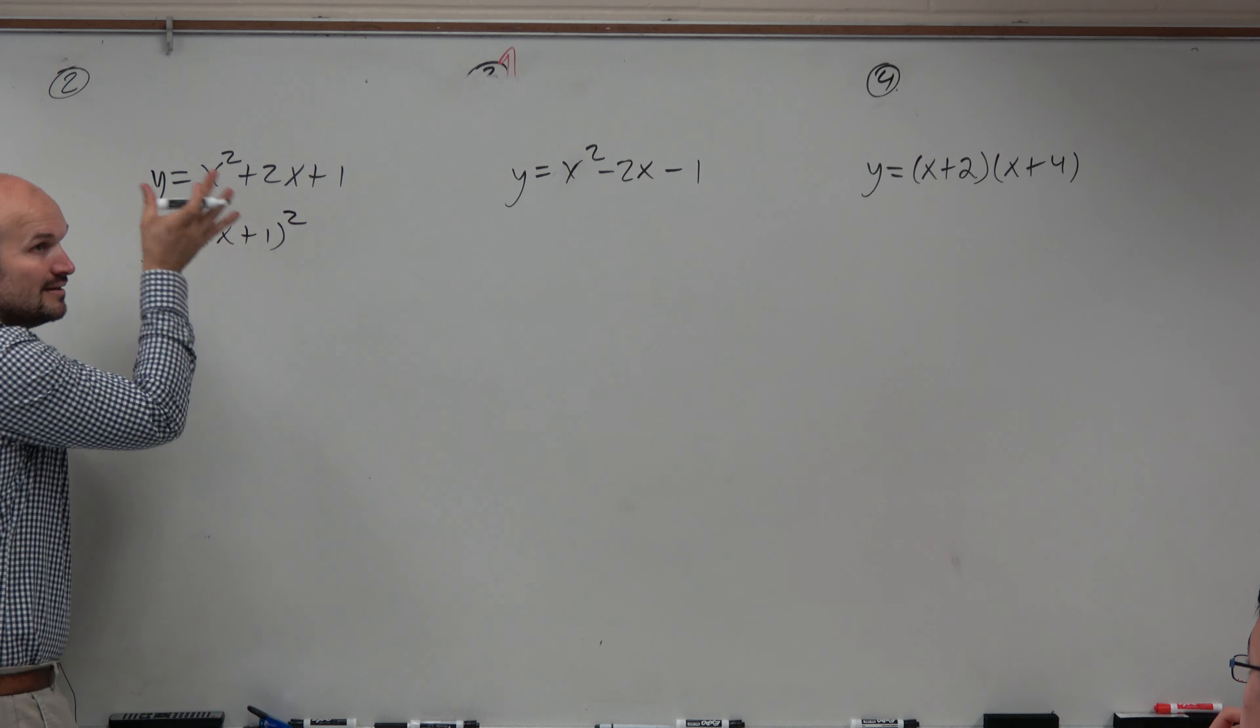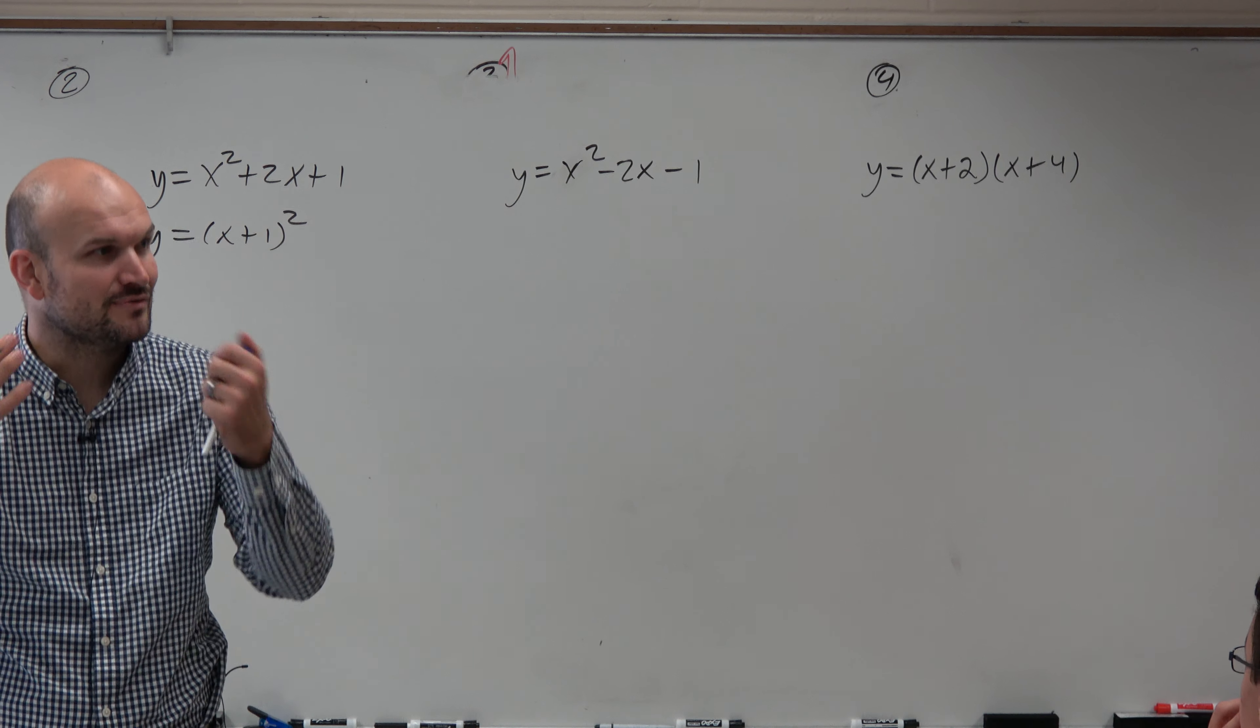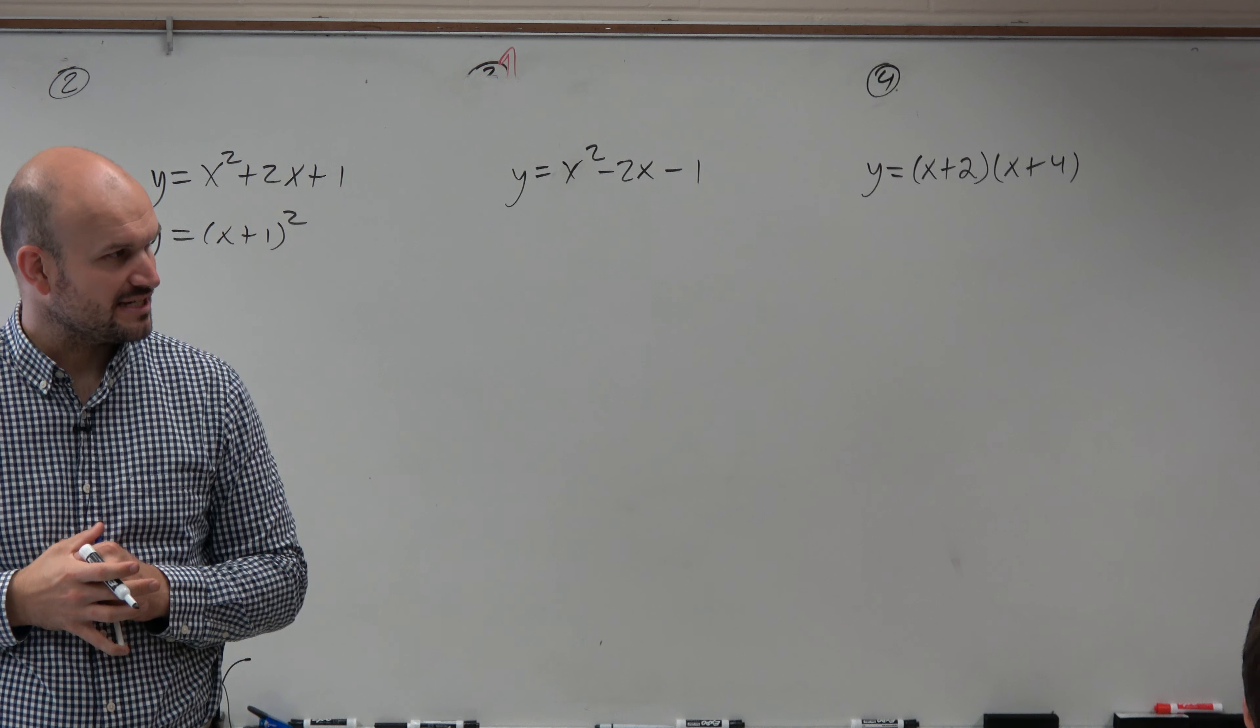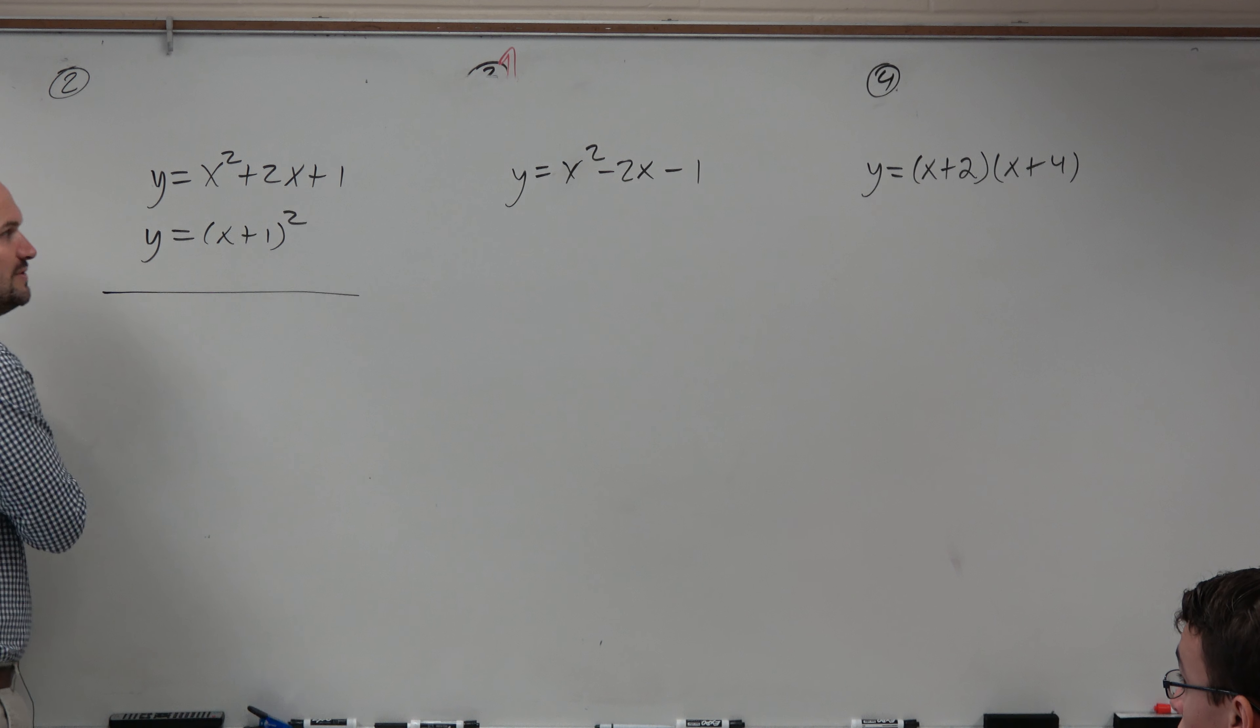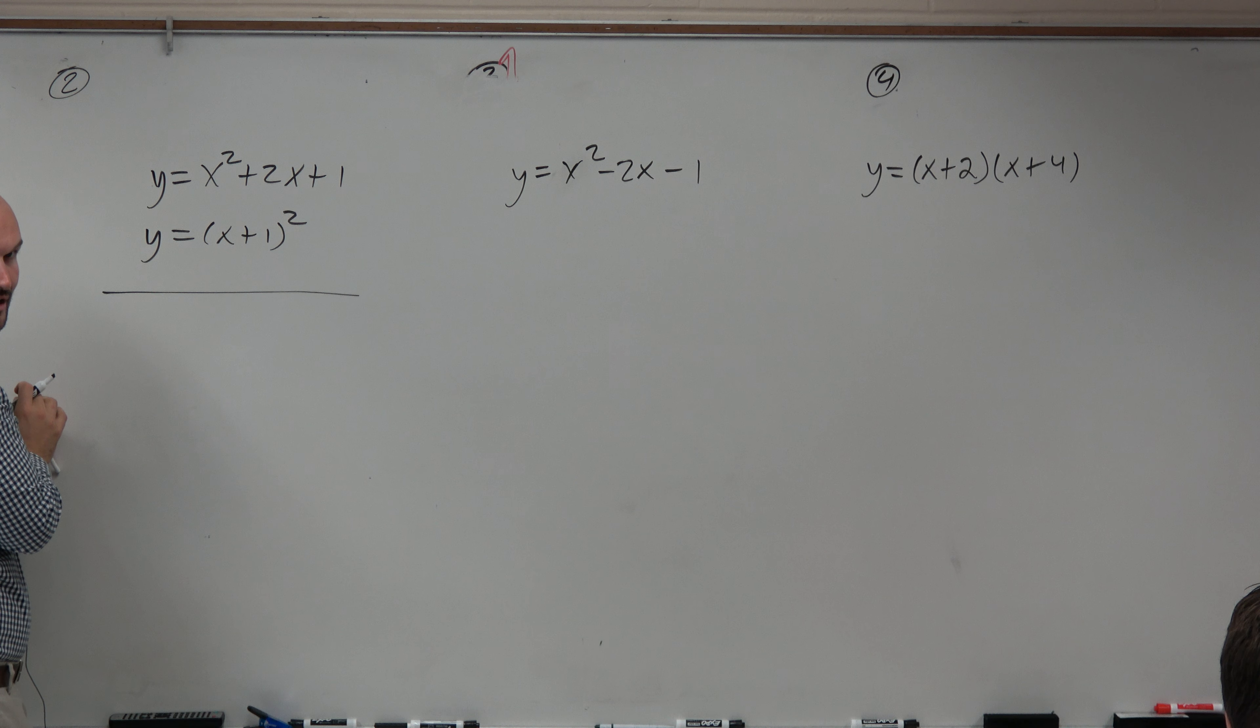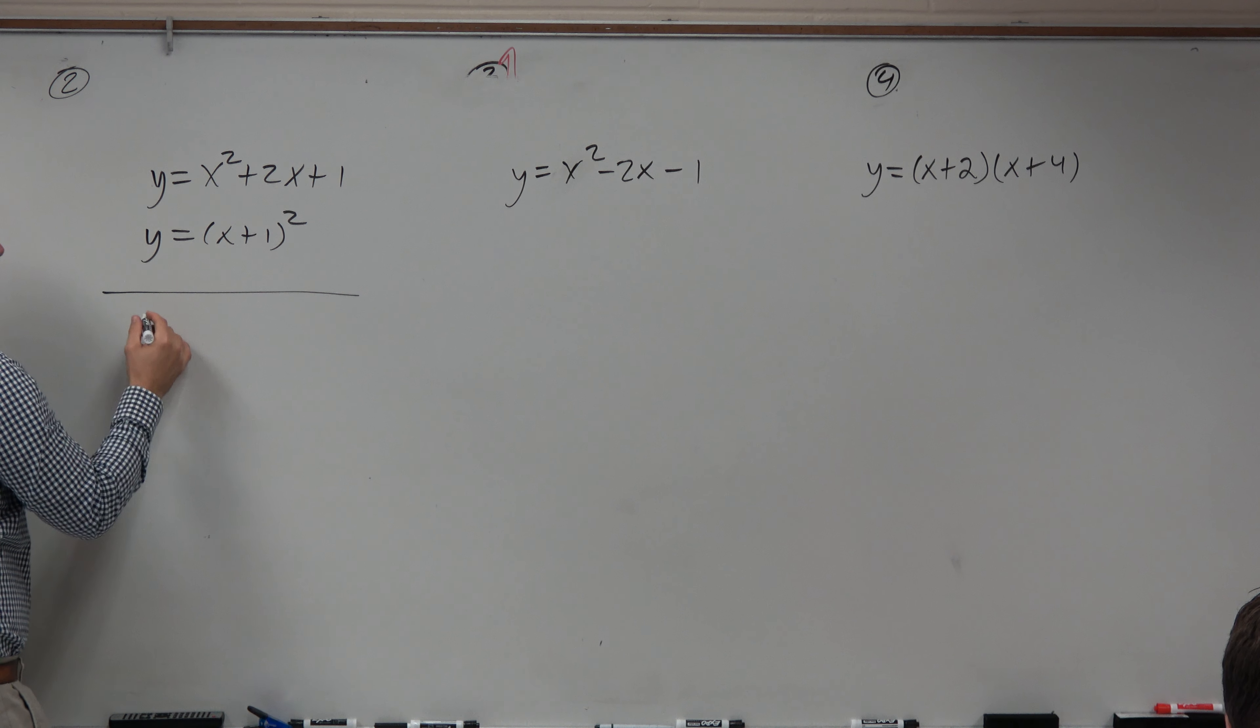Hey, guess what? That's in vertex form. So literally, just by factoring it, I achieved what I wanted to achieve. It's in vertex form. Now, for the sake of completing the square, let's actually do that to get to this method. But hopefully you guys will see that just by factoring this one really quickly, I achieved exactly what I needed to achieve. That's why knowing how to factor is so very helpful.